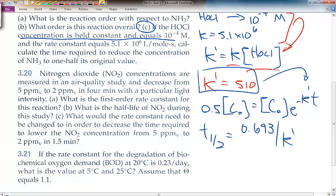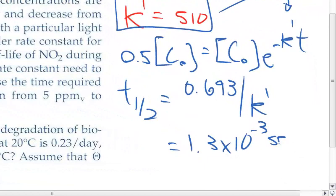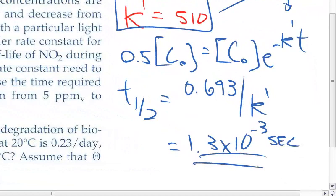We calculated our K prime based upon that information, and we should get T half equal to 1.3 times 10 to the minus 3 seconds when we calculate that.